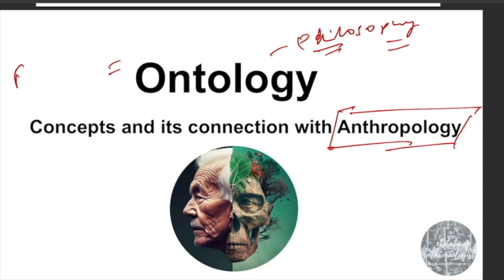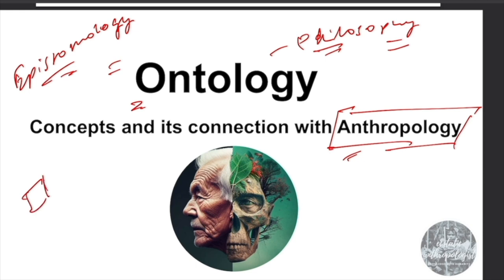Okay, so ontology is part of philosophy. Philosophy and anthropology are branches of humanities and social science. Ontology, epistemology — these are all part of philosophy. So how philosophy is connected to anthropology, and specifically how ontology is connected with the concept of anthropology.